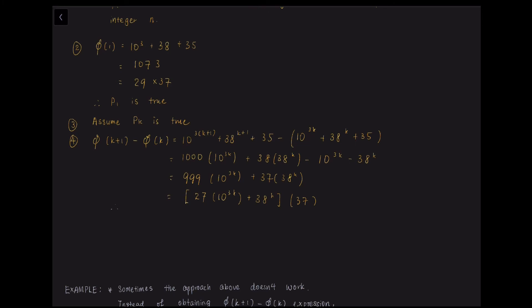So what you are going to do now is to factorize 37 out of these two, and if you manage to do so, it proves that both of these are divisible by 37. So it is doable because 999 is 27 times 37. Therefore, φ(K+1) minus φ(K) is divisible by 37.